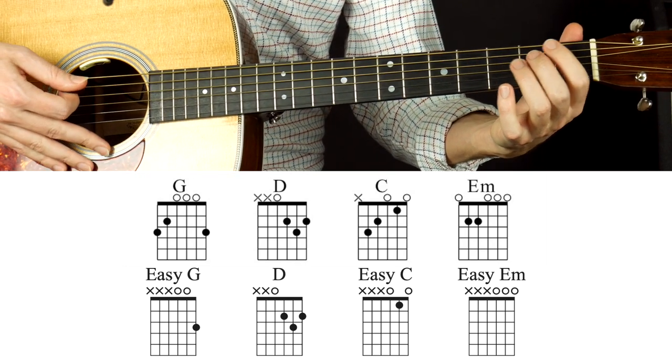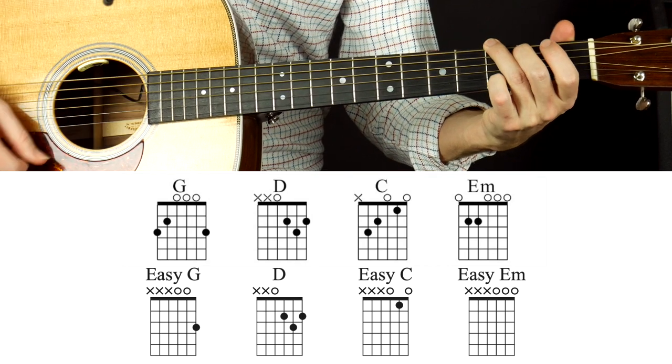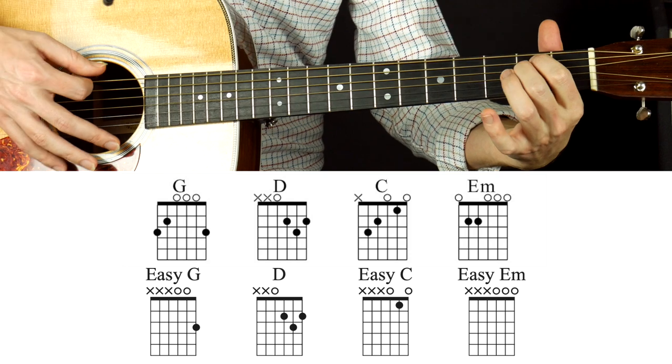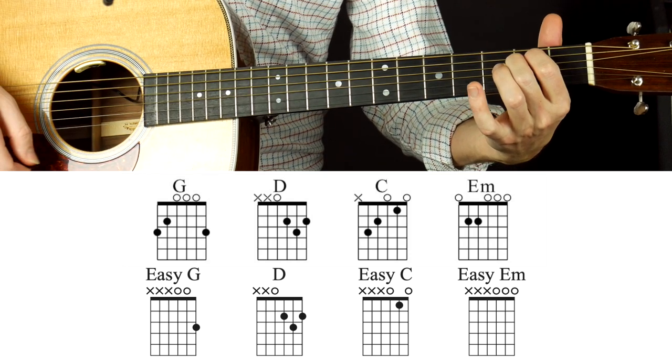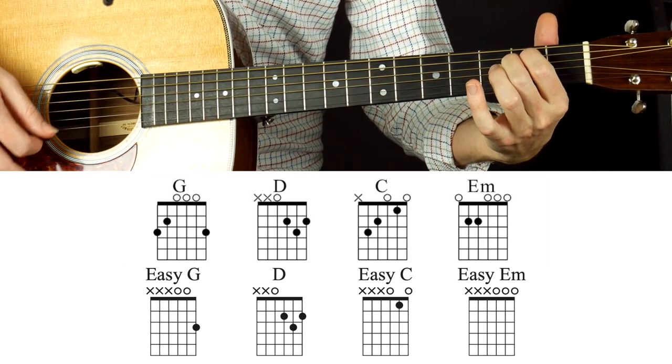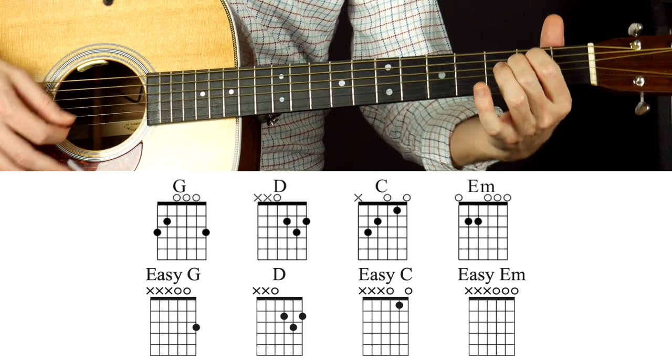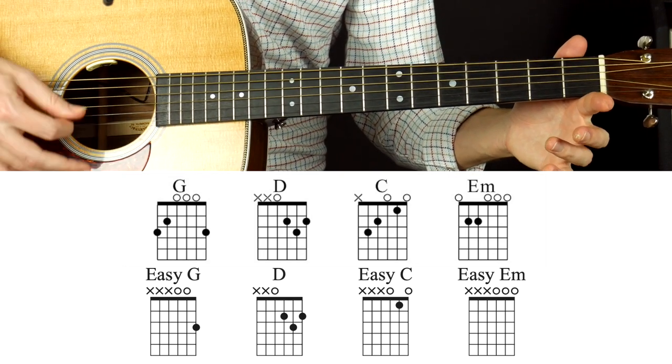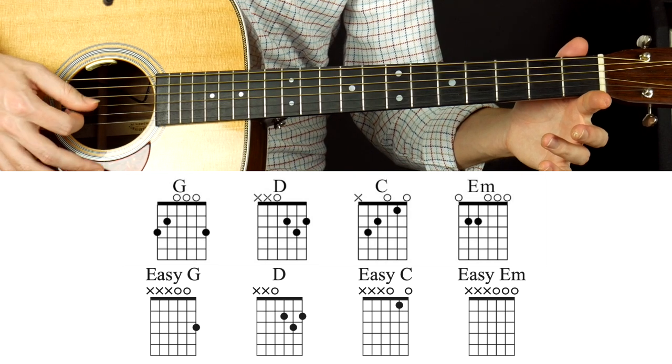All right, then we've got E minor. So E minor, what I would do if I was playing the full chords is probably do fingers one and two on the second fret of strings four and five, counting toes to nose. But on the easy version, we just do the open three strings, top three strings, one, two, three, toes to nose.